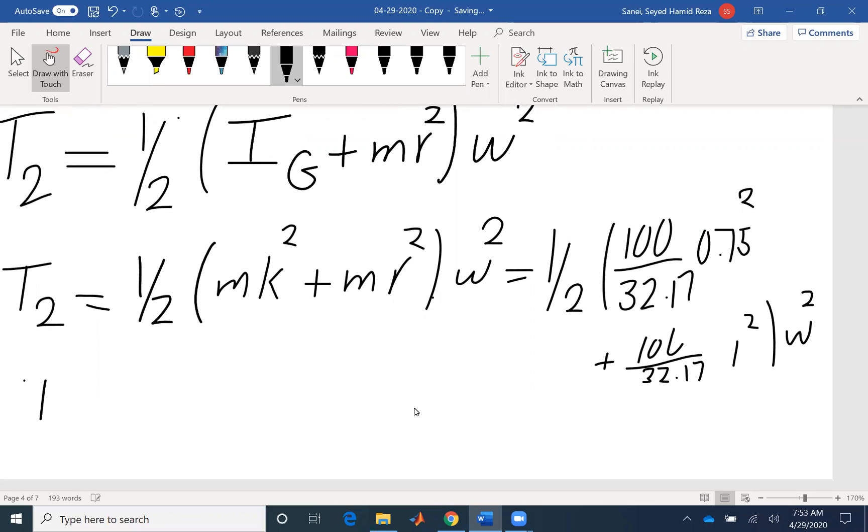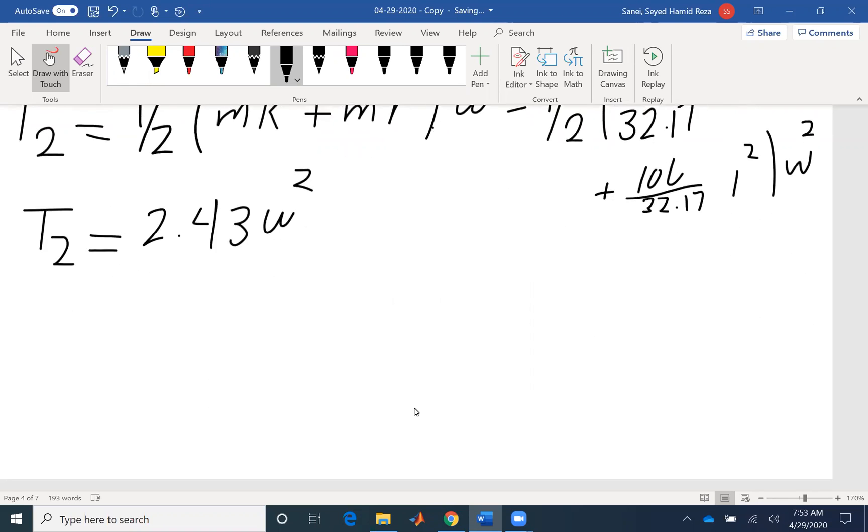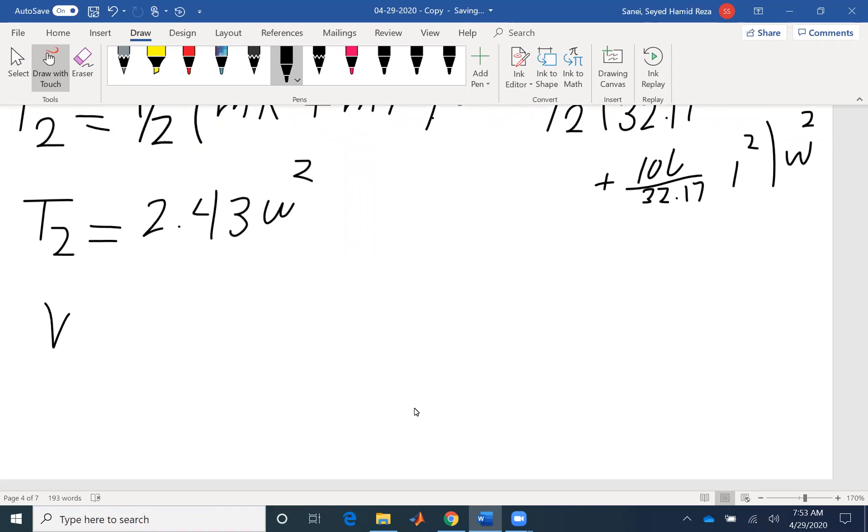So T, the second kinetic energy would be 2.43 omega squared. I don't have omega. That's the unknown of the problem. The potential energy that I have is the gravitational potential energy. And all I have is the distance that it falls. Mg is the weight, so it's 100. It falls 4 feet.